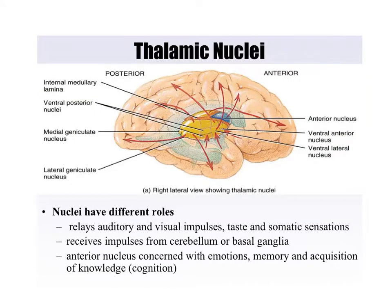Here you have the thalamic nuclei. I'm not going to say much on this because you're not going to need to know it, but you can see all the various roles the thalamus plays. The most important one: it is a relay station — it relays sensory information to the primary somatosensory cortex, and that's what allows you to feel sensations around your body.